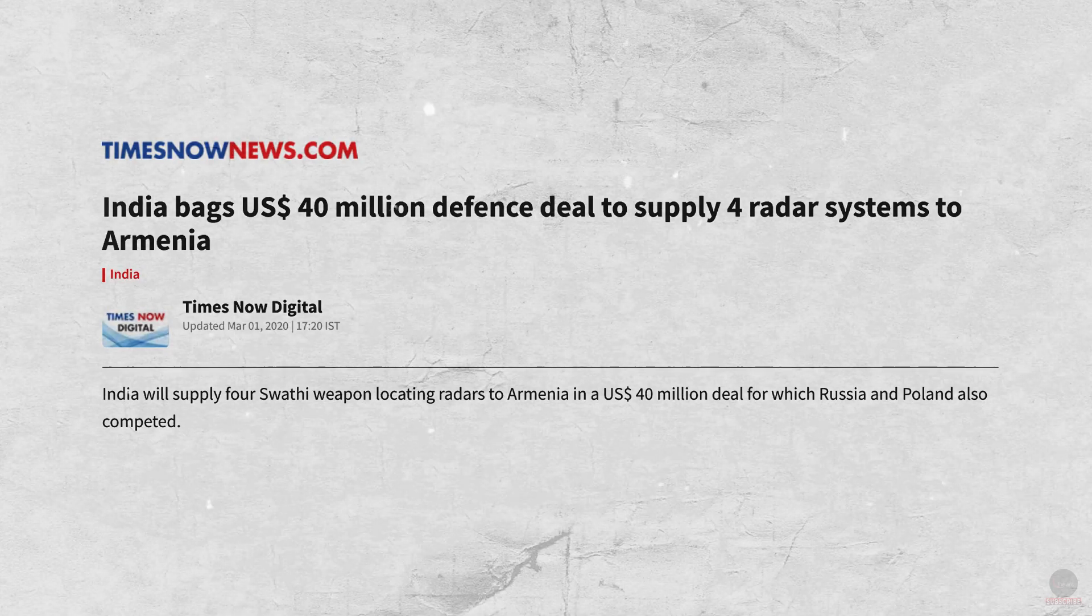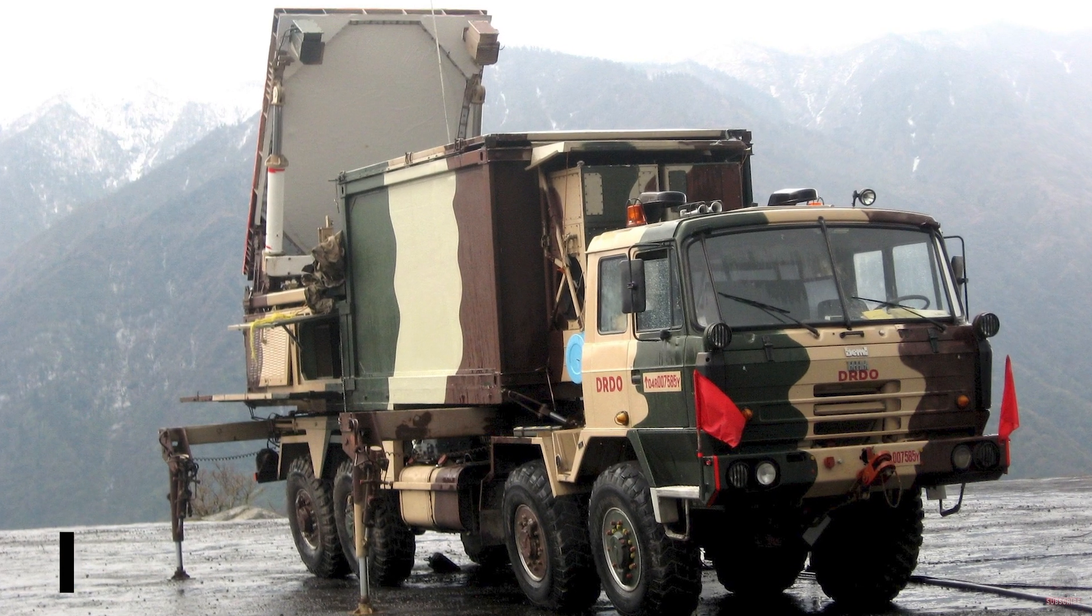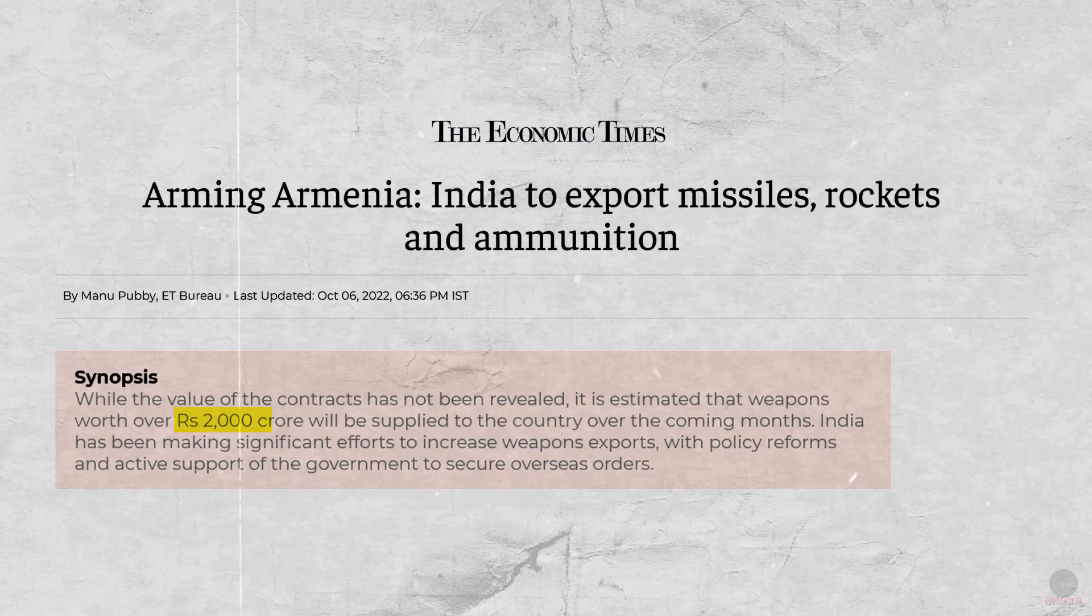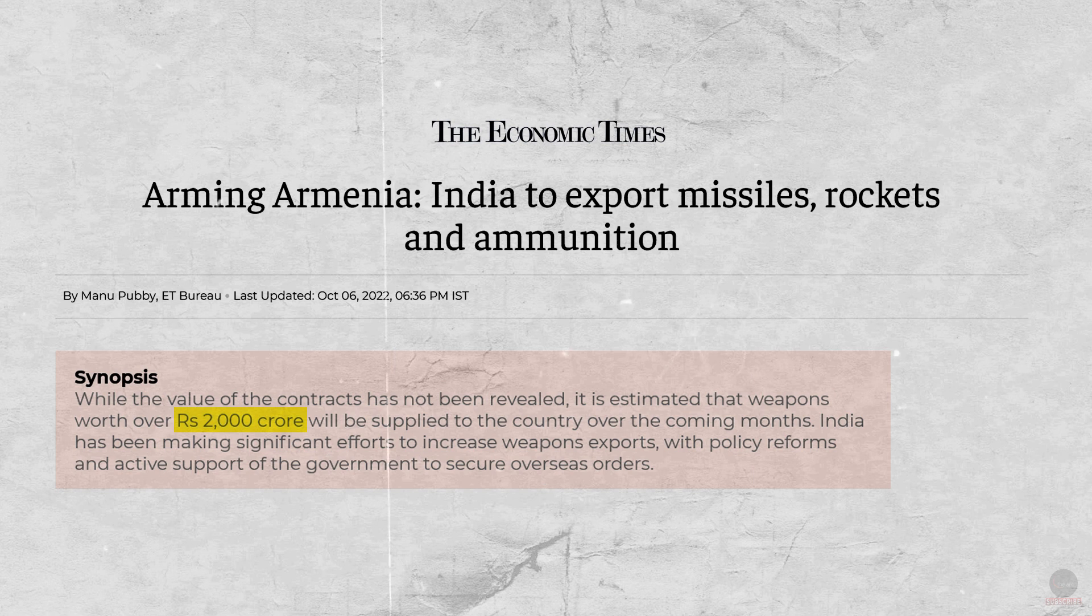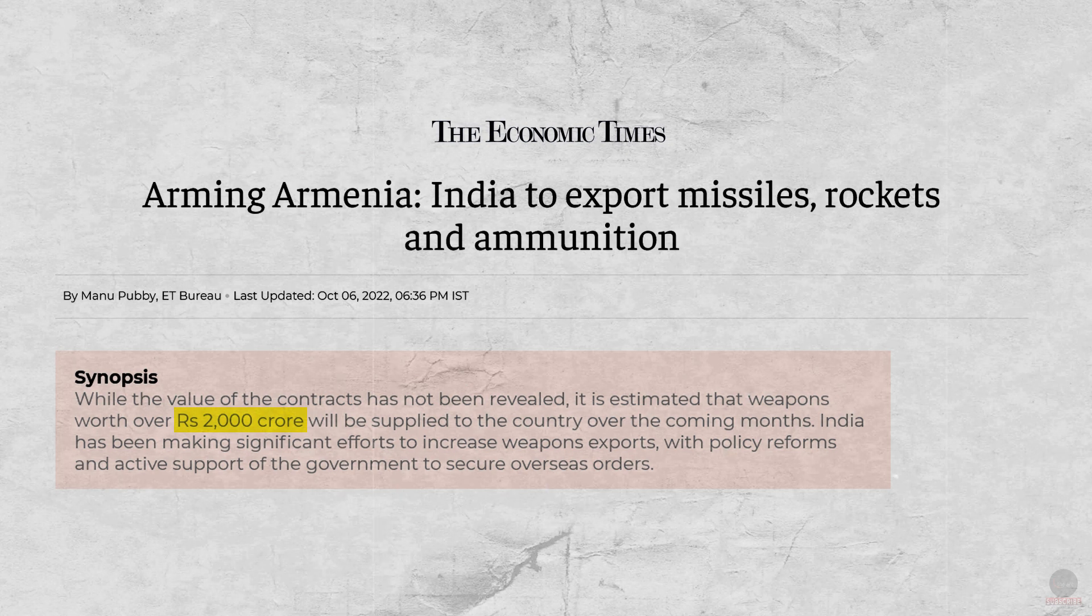Now, as far as defence equipment are concerned, in May 2020, India agreed to supply four Swati weapon-locating radars, developed by DRDO, for a price of $40 million. India and Armenia signed another $245 million worth of arms deals that includes India sending missiles and other offensive and defensive systems, exact details of which have not been made public. But sources suggest Armenian forces have likely sought the Pinaka multi-barrel rocket launchers and Konkurs anti-tank guided missiles, among other things.